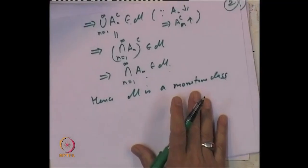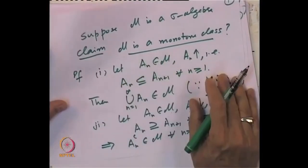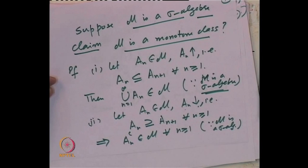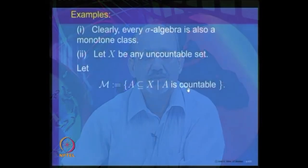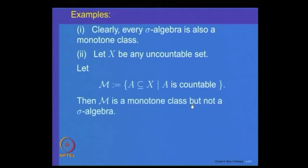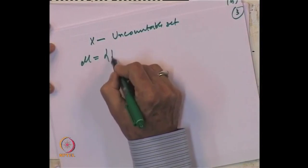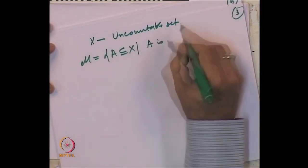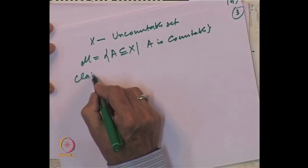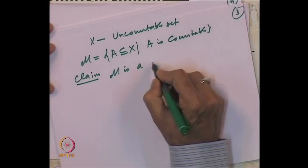So the first observation is that every sigma algebra is also a monotone class. Let us look at another example. Let X be any uncountable set and let M be the collection of all subsets A of X such that A is countable. The claim is that this collection M is a monotone class, but it is not a sigma algebra.